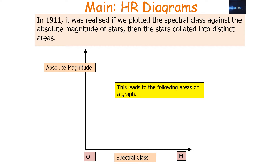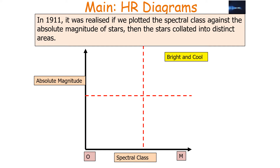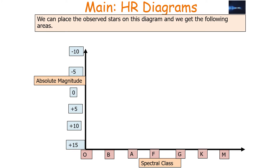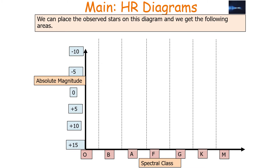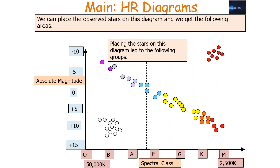This leads to the following areas on the graph. In the top left-hand corner you get bright and hot stars. In the bottom left-hand corner we get hot and dim stars. In the top right-hand corner we get bright and cool stars, and in the bottom right-hand corner we get dim and cool stars. When we place the observed stars on this diagram, the stars are not randomly scattered — they are divided into three principal groupings.